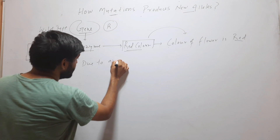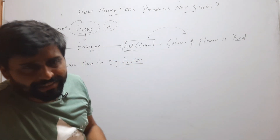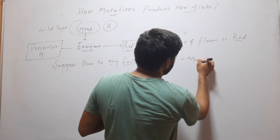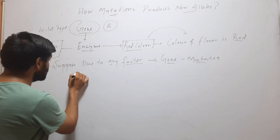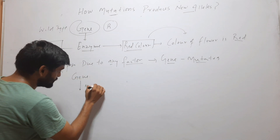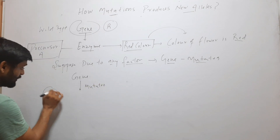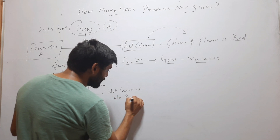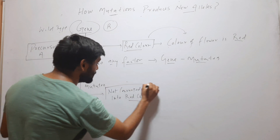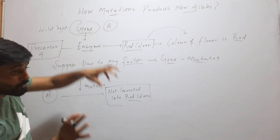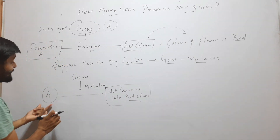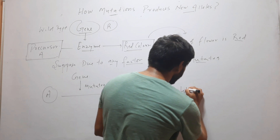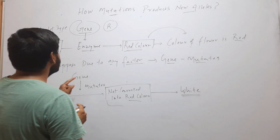Now suppose due to any factor — any environmental factor, any stress factor — this gene mutates. Due to that mutation, this gene cannot convert the precursor A into red color. If there is no red color, the color of the flower will be white.